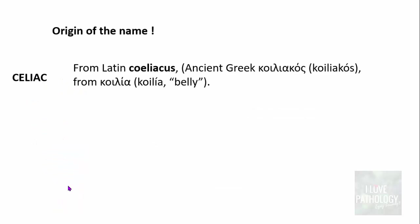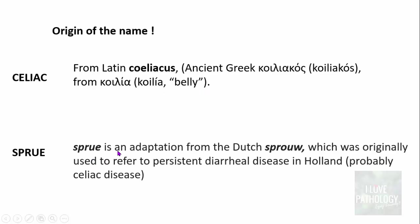The word 'celiac' comes from the Latin word 'celiacus,' which derives from the ancient Greek 'koliacos,' meaning belly. 'Sprue' is an English adaptation from the Dutch 'sprue,' which was originally used to refer to persistent diarrheal disease in Holland, probably because of celiac disease itself.